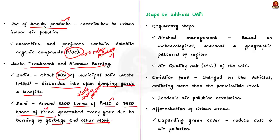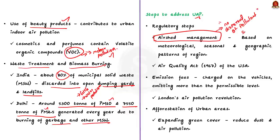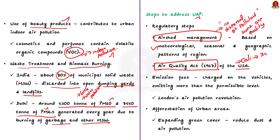Now let us see steps that can be taken to address urban air pollution. First, there should be comprehensive air shed management. According to the World Bank, an air shed is a geographical area where local topography and meteorology limit the dispersion of pollutants. The entire air shed should be identified for better air pollution management. In the United States, the Air Quality Act of 1967 divided California into 35 districts based on similar geographic and meteorological conditions, with pollution regulated at state level — resulting in effective reduction of emissions by 98% from 2010 to 2019.